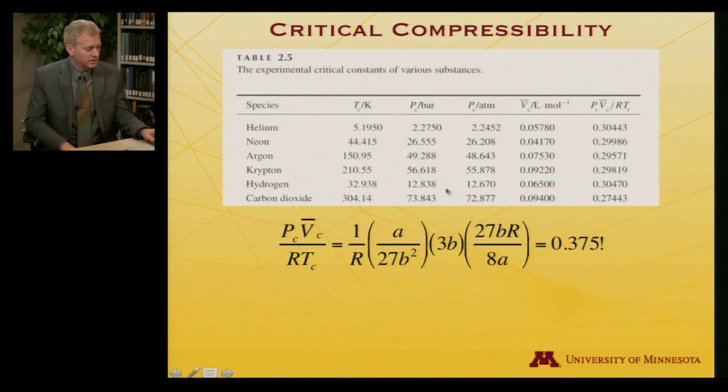Now that we know how to relate the van der Waals parameters to the critical properties, let's plug that in. Here's R—R is always R. Let's take out the 1 over R. We'll replace the critical pressure with its expression using van der Waals parameters, the critical molar volume with its expression, and finally the critical temperature with its expression, 1 over that, because the critical temperature is in the denominator.